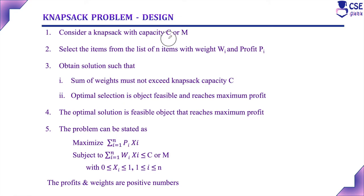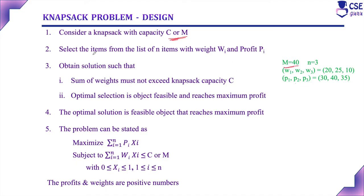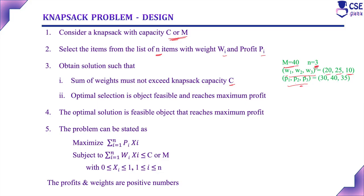First, consider the knapsack with capacity C or M. For example, the capacity is given in the problem. Second, select items from the list of N items with weights and profits. In this example, there are 3 objects: the first object has weight 20, the second has weight 25, and the third has weight 10.